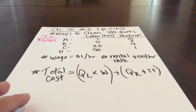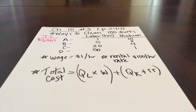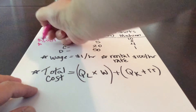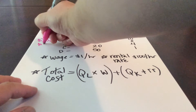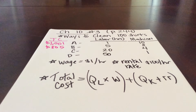We're going to do the same thing for option B. We have a quantity of labor of 5 times our wage rate of $1, which is $5. Then we take the quantity of machines of 8 times the rental rate of $100 to give us $800, and our total cost for option B would be $805.